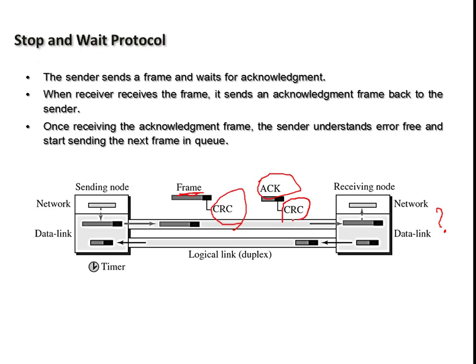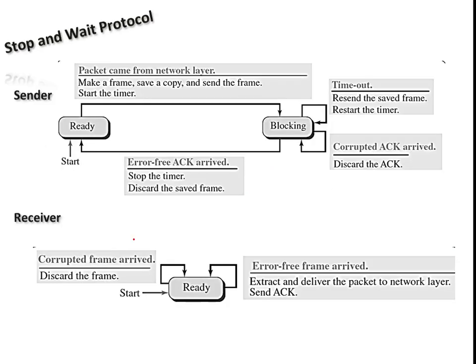Once the sender sends data, whether it is received correctly or not is determined using an error-checking method such as CRC — cyclic redundancy check — where extra bytes are added to check if the received packet is corrupted. If the receiver keeps silence and does not send an acknowledgement, the sender knows there is an error, maintains a copy of the data, and resends it. If an acknowledgement is received, the sender proceeds with the next data.